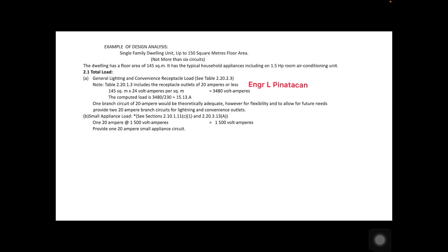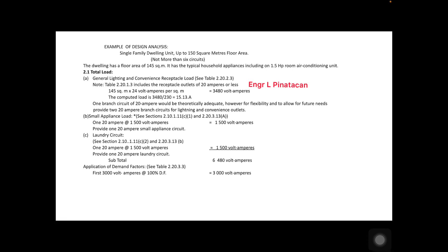Next, we need a laundry circuit for the laundry machine, referenced in section 2.20.1.11.C and section 2.20.3.13. We allocate 20 amperes at 1,500 volt-amperes apparent power for the laundry machine, providing a 20-ampere laundry circuit. This gives us a total of 6,480 volt-amperes.